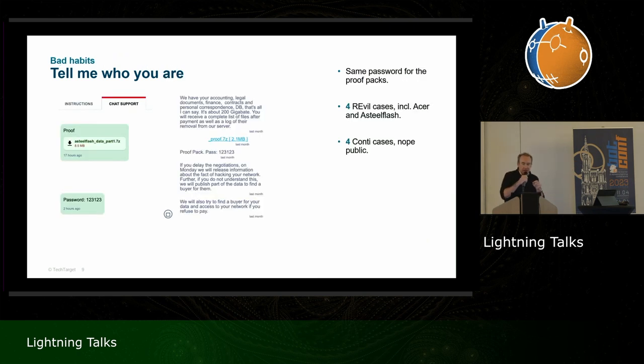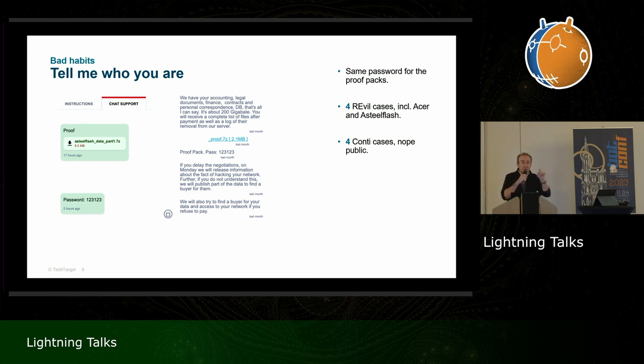To finish quickly: I suspect someone moved from REvil to Conti. If you see someone encrypting a proof back at 123123, please reach out and tell me the group — I'm curious.